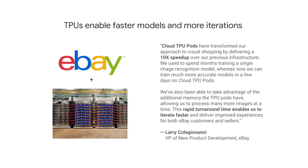One such business that uses TPUs is eBay. They use Cloud TPU pods to deliver faster inferences — that is, predictions — to their users by a factor of 10, a 10x speedup. The decrease in model training time has also led to faster model experimentation. ML model training and feature engineering is one of the most time-consuming parts of any machine learning project. eBay's VP of new product development remarked that the additional memory of the TPU pods enabled them to improve their turnaround time and iterate faster.